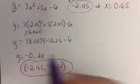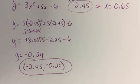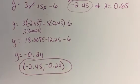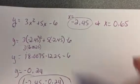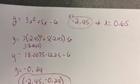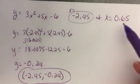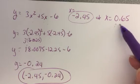So there's our first point of intersection for our two quadratics. Now let's do our second x value, which is that 0.65. So again, I'm going to use the same equation, that 3x squared plus 5x minus 6. And this time just substitute in 0.65.